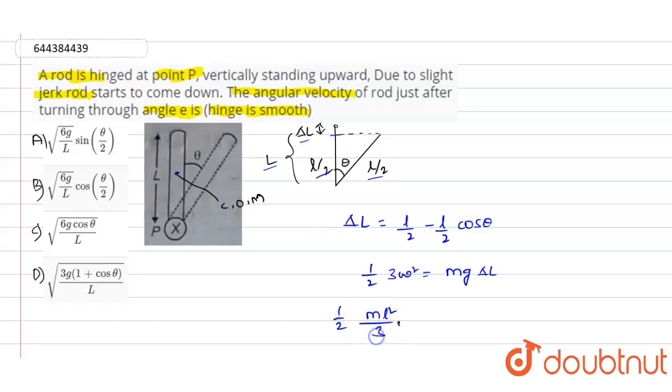That will be equals to mg × L/2 × (1 - cos θ).